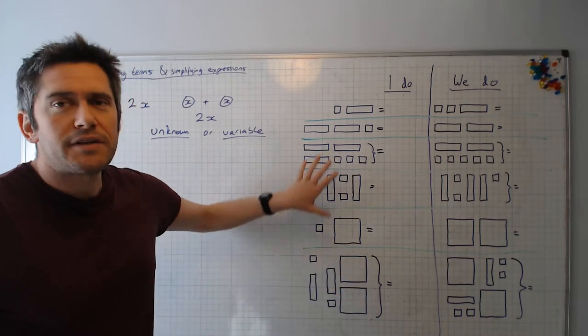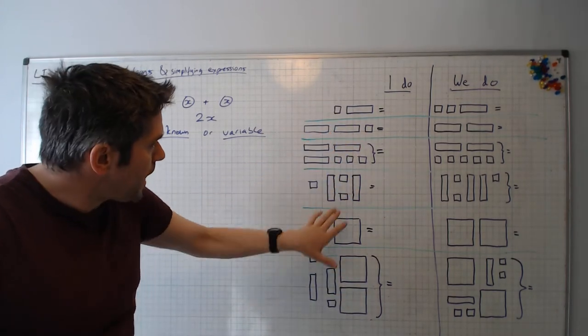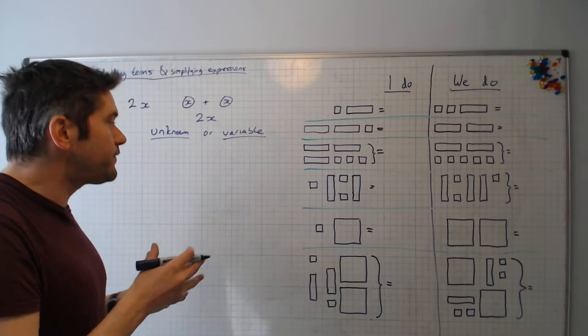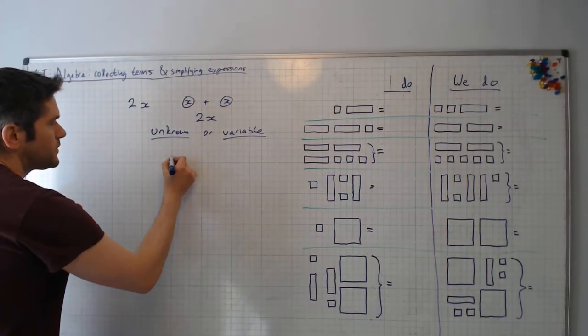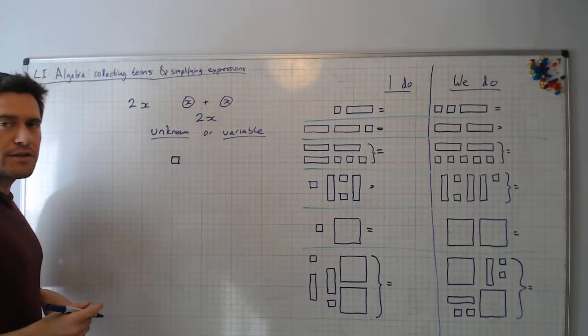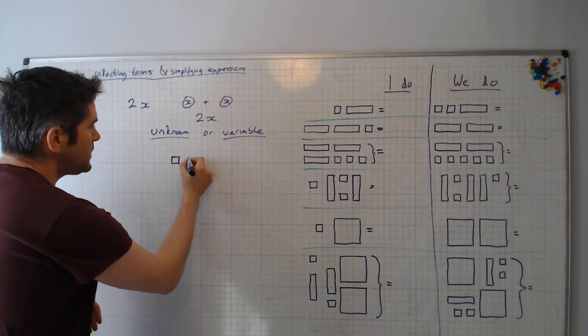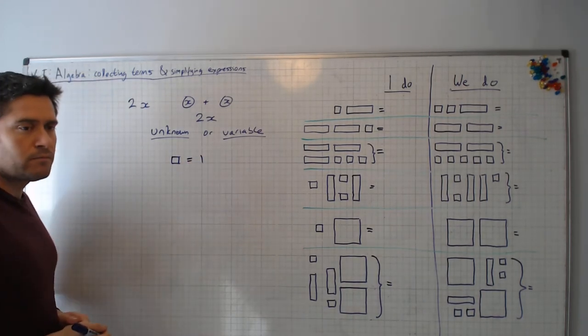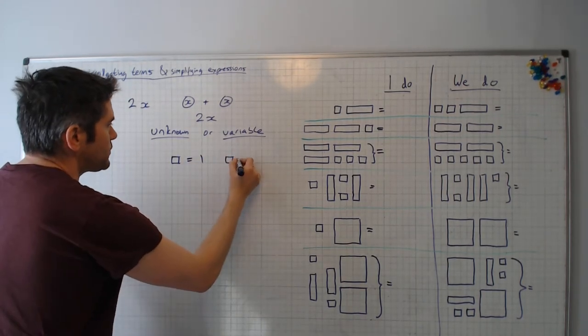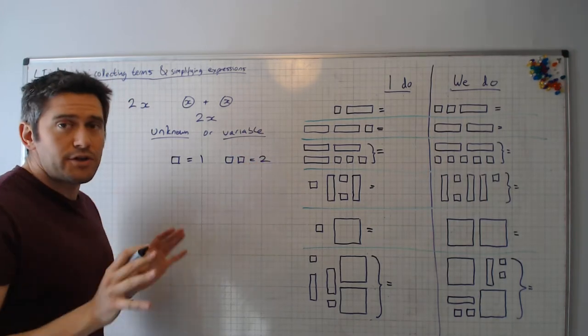Over here you see we've got lots of squares and lines, then we've got some bigger squares as well. So we're just going to define something for you here. I'm going to say that a small square like this, that is equal to 1. So if we have two small squares, that must be equal to 2.